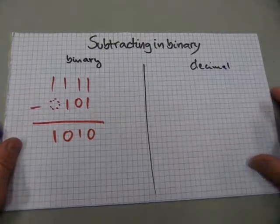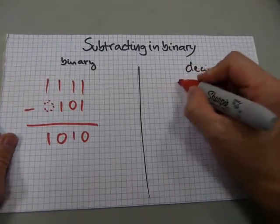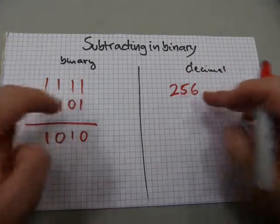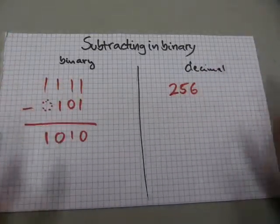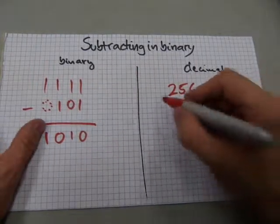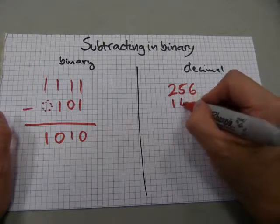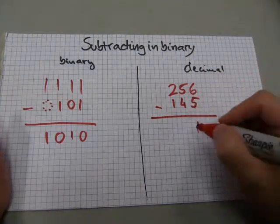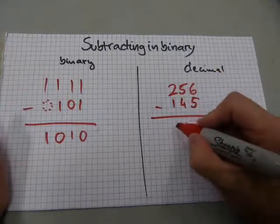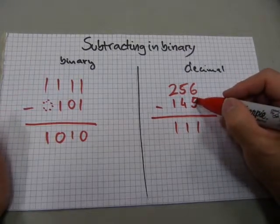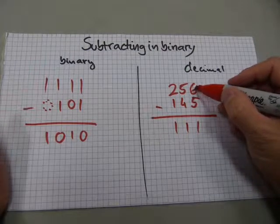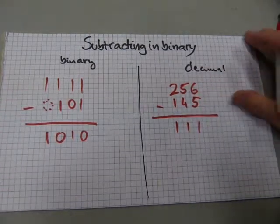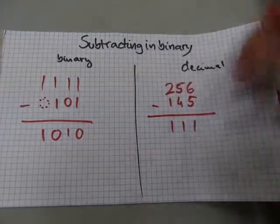It's very similar in terms of decimal thinking. If you have a number like 256, and you subtract a number just less than each digit — say less than 2, less than 5, less than 6 — it's straightforward: 6 minus 5 is 1, 5 minus 4 is 1, and 2 minus 1 is also 1. When every digit in the lower number is less than the corresponding digit in the upper number, you can subtract without borrowing.